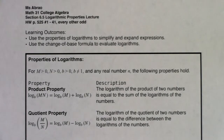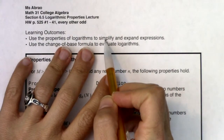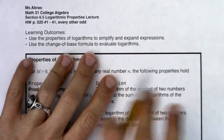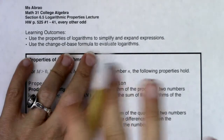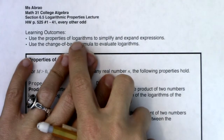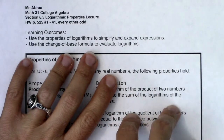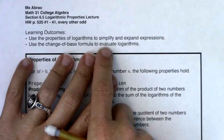Hey Math 31, welcome to section 6.5. We're going to take a look at a bunch of properties of logarithms, and we're going to simplify logarithms and expand logarithms. Logarithms behave differently than real numbers, exponential functions, radicals, and powers. There are certain rules that govern logarithms, and I'm going to teach you those rules and properties so we can manipulate logarithms. I'm also going to teach you about the change of base formula to evaluate logarithms.